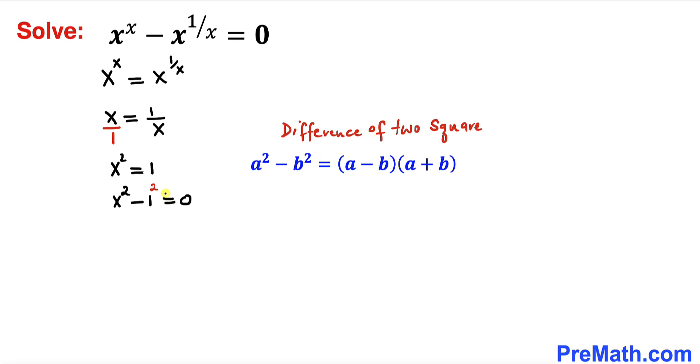So therefore, we are going to apply this identity. This is going to give us x minus 1 times x plus 1 equals to 0. Now we can see that these two factors are equal to 0.